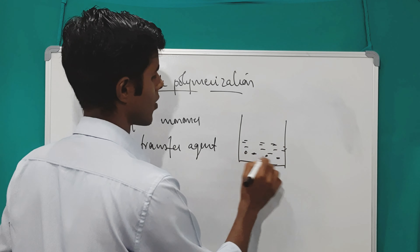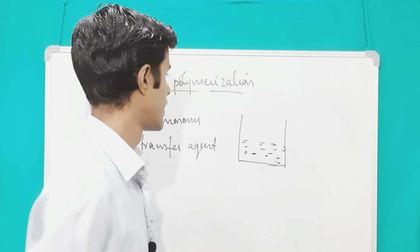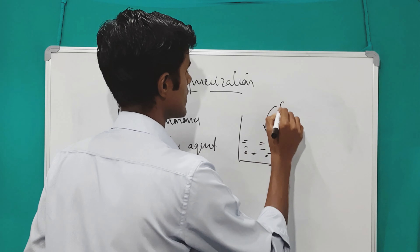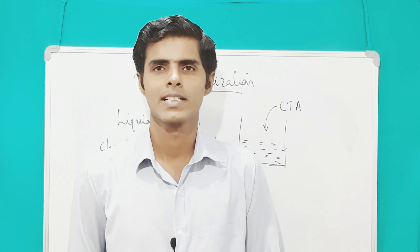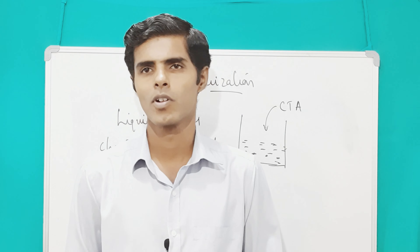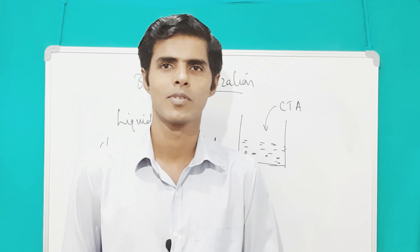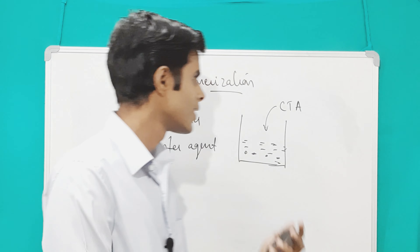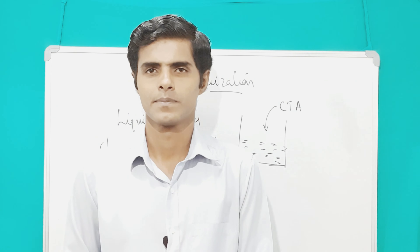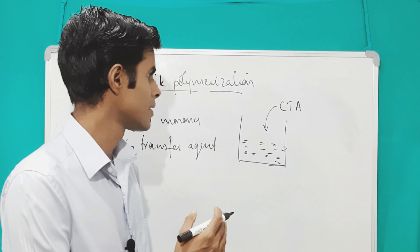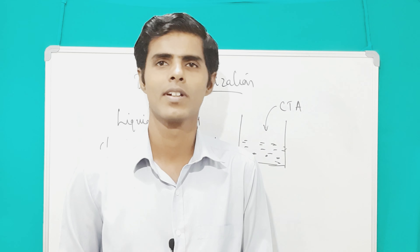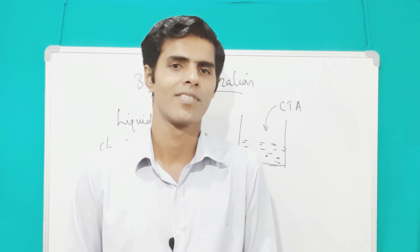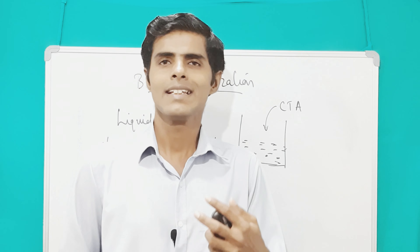The chain transfer agent is added to the liquid monomer droplets. The duty of this chain transfer agent is to control the molecular weight of the polymer to be formed. Continuous agitation of the chain transfer agent with the liquid monomer will give you a homogeneous solution of a polymer.